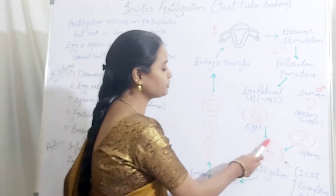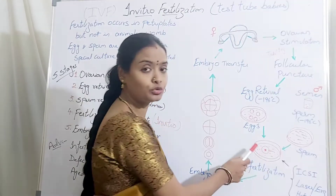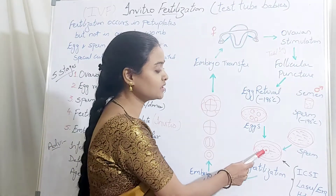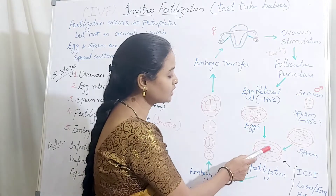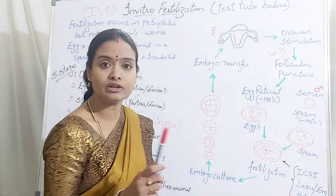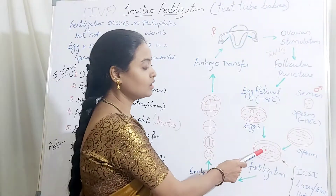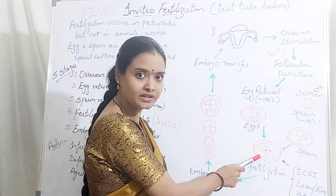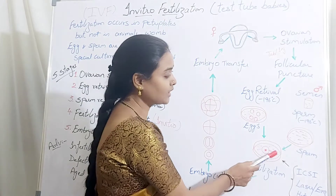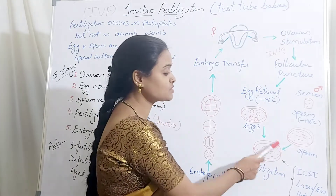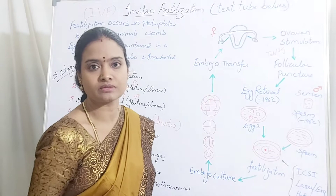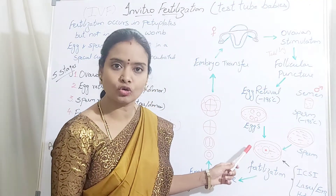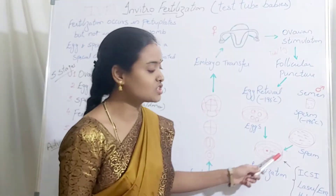If both egg and sperm cells are ready for fertilization you proceed with the fertilization technique. In a petri plate you maintain nutritive media and well tissue culture media required for embryo development. You take only one mature oocyte which is ready for fertilization. Then sperm cells are added to this petri plate and incubated overnight in the incubator so that fertilization occurs.